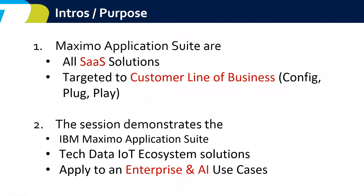Introduction and purpose. Two key features of the Maximo Application Suite: they are all SaaS solutions, which means they target the customer line of business. This is compared to Azure and AWS. Azure and AWS are the building blocks for technical people to put together solutions for business, targeted to ISVs or technical teams inside the customer. IBM's solution is directed to the customer — it requires no coding, only basic configuration, and is plug-and-play. It's much easier than Azure and AWS solutions. This session demonstrates how IBM Maximo Application Suite and TechData IoT ecosystem solutions together apply to enterprise AI use cases.